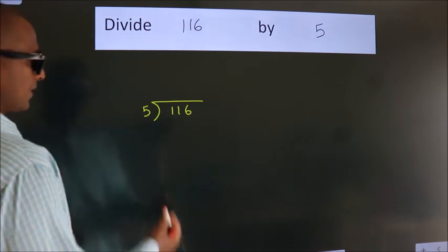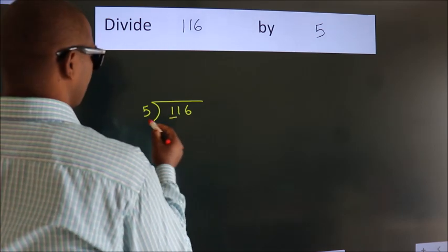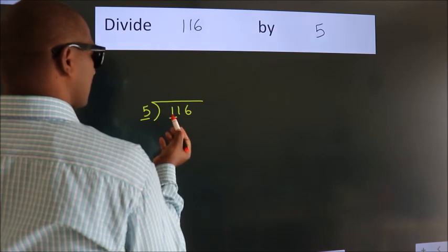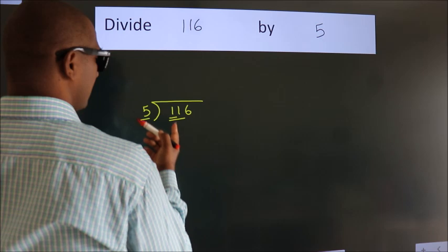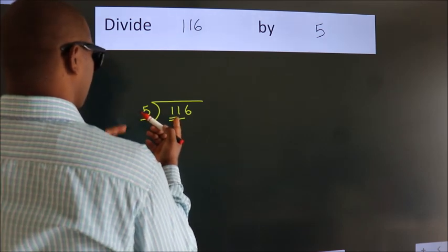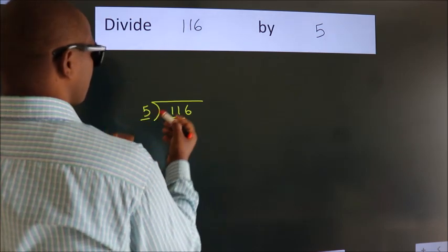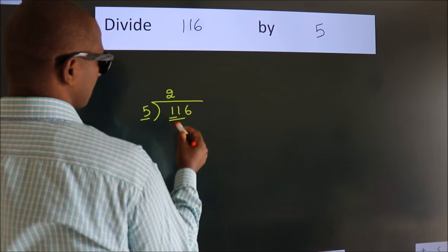Next, here we have 1, here 5. 1 is smaller than 5, so we should take 2 numbers: 11. A number close to 11 in the 5 table is 5 times 2 equals 10.